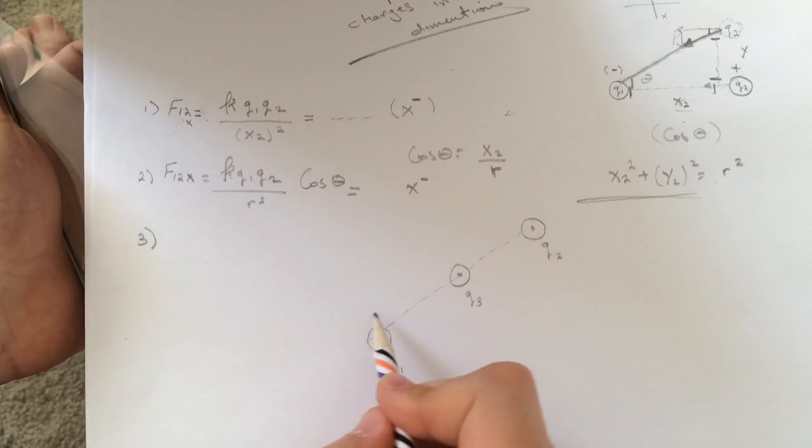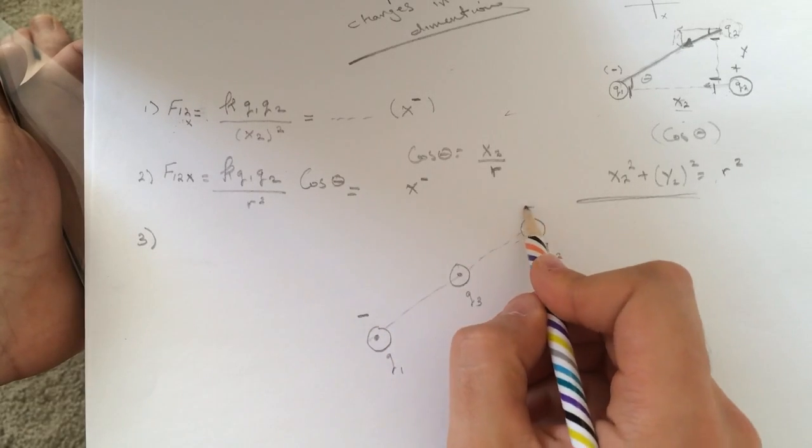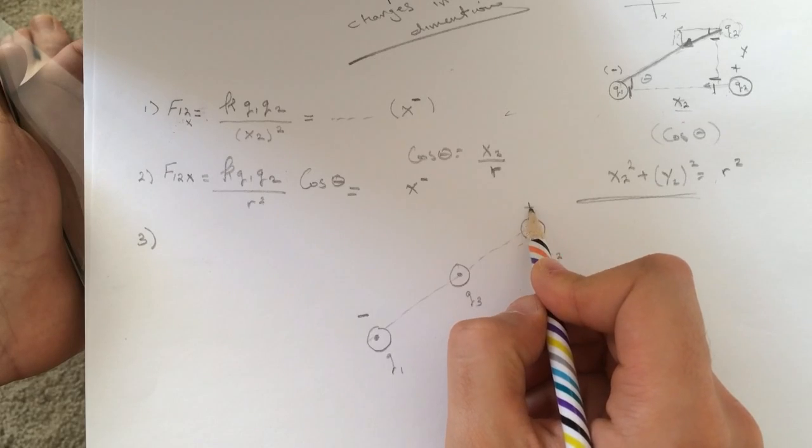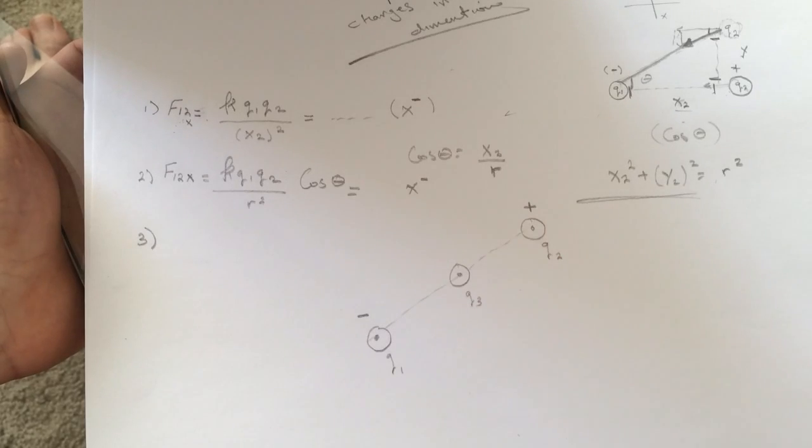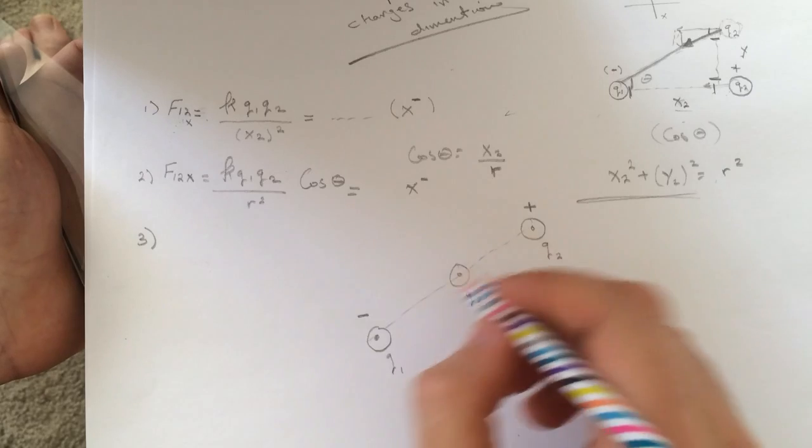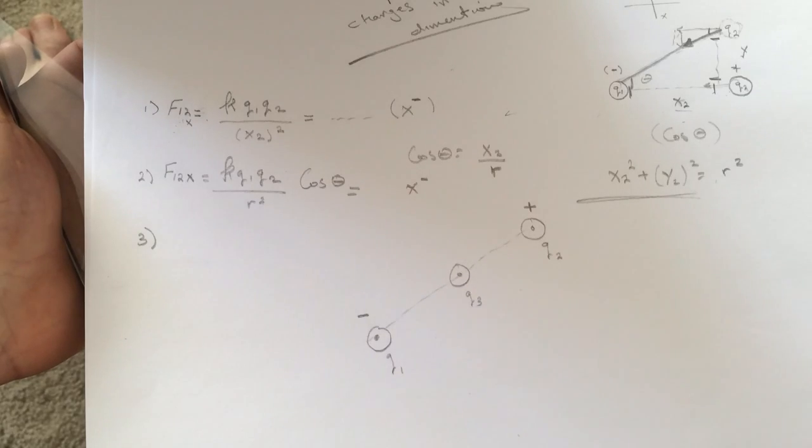So this guy is q1, q2. This guy was negative. This guy was positive. And they put it in the middle between those two.